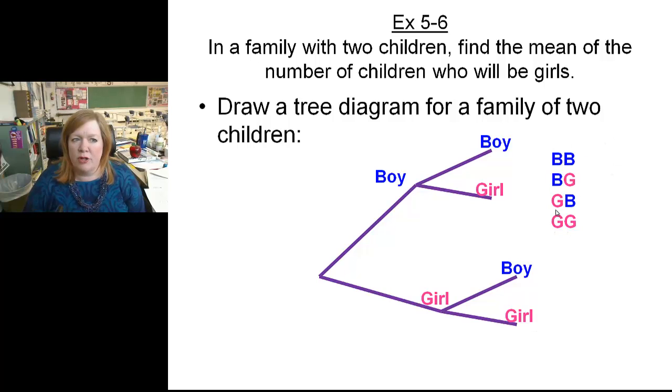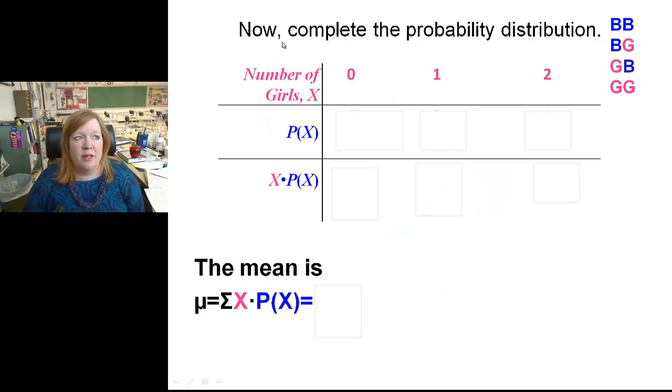And then here would be your sample space. Boy, boy, boy, girl, girl, boy, girl, girl. So we're going to do a probability distribution, and then find the mean. Number of girls, there's zero girls, one girl, and two girls in our sample space. So probability of no girls would be just the first one, both boys, which is one fourth. One girl is two fourths, and two girls is one fourth. Then to find the mean...